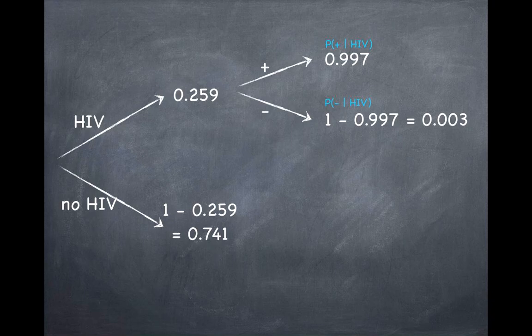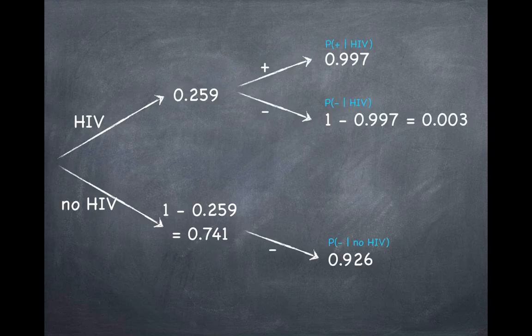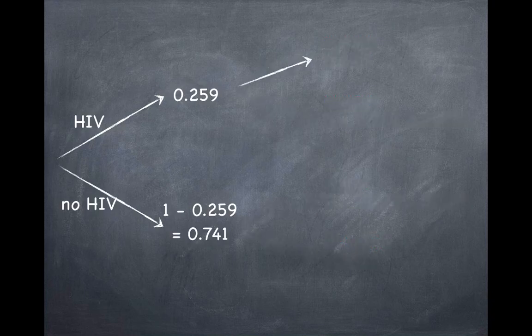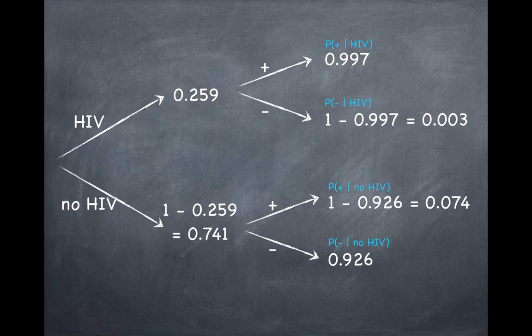Now let's move on to the bottom branch — the people who are not HIV carriers. Once again, when they take the test, one of two things can happen. They might test negative, and we know that the probability of that is 0.926 — this is the accuracy of the test when a person is not a carrier. And the probability of a false positive — the probability that they test positive if they don't have HIV — is simply the complement of that, 0.074.